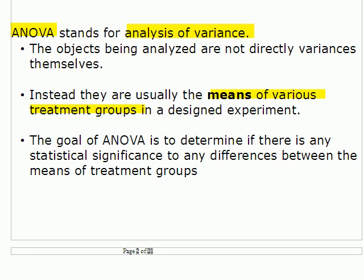In this example you would measure the growth of the plants in each group — say there are 40 in each group. There's going to be some average, some mean associated with it, and some standard deviation. What you're looking at is the means of these various treatment groups, and the goal is to ask: is there any significance to differences between those means?